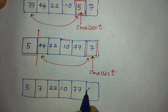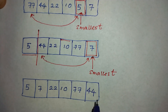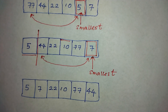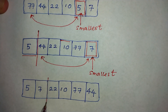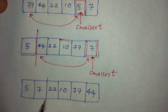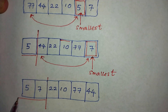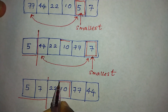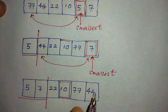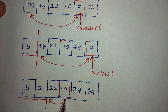The left side of the array is already sorted — you can see 5, then 7. Then again we're finding the smallest element of the right side of the array, which is 10. Now we are swapping 10 with 22, and 10 will go to the beginning of the unsorted part.